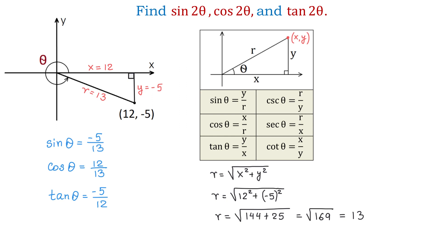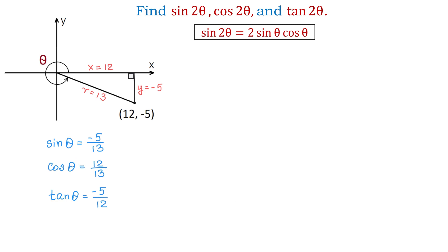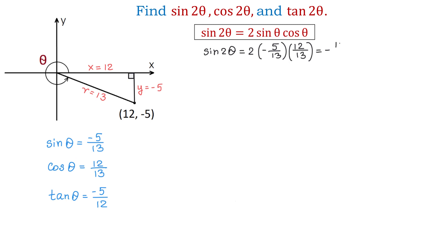Now, using the double angle formulas, we will find sine of 2 theta, cosine of 2 theta, and tangent of 2 theta. The first formula is sine of 2 theta equals 2 sine of theta cosine of theta. In this formula, we will replace sine of theta with negative 5 over 13, and cosine of theta with 12 over 13. Then sine of 2 theta equals 2 times negative 5 over 13 times 12 over 13, which equals negative 120 over 169.